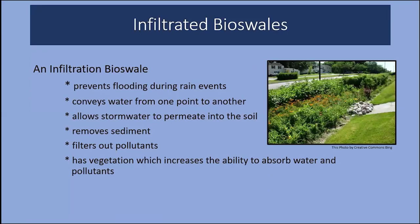An infiltration swale also conveys water, but its design allows some water to permeate into the soil while plants filter out sediment and pollutants. The water quality benefit is a little lower than a rain garden, since a rain garden holds water for a longer period. But it can exit into a rain garden where it will have the opportunity to permeate the soil over a longer period of time, or exit via pipe into a gutter or storm drain.